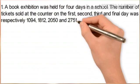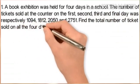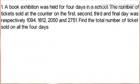Find the total number of tickets sold on all four days. A book exhibition was held for four days in a school and each day they sold a certain number of tickets. On the first day they sold 1094 tickets, on the second day 1812 tickets, on the third day 2050 tickets, and on the fourth day 2751 tickets. You are asked to find the total number of tickets sold on all four days.